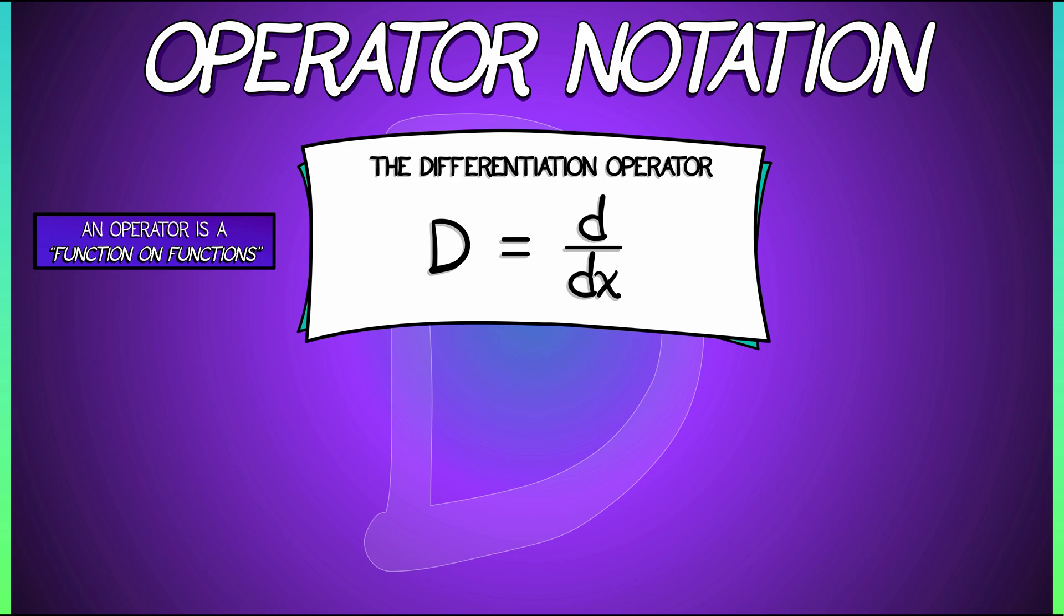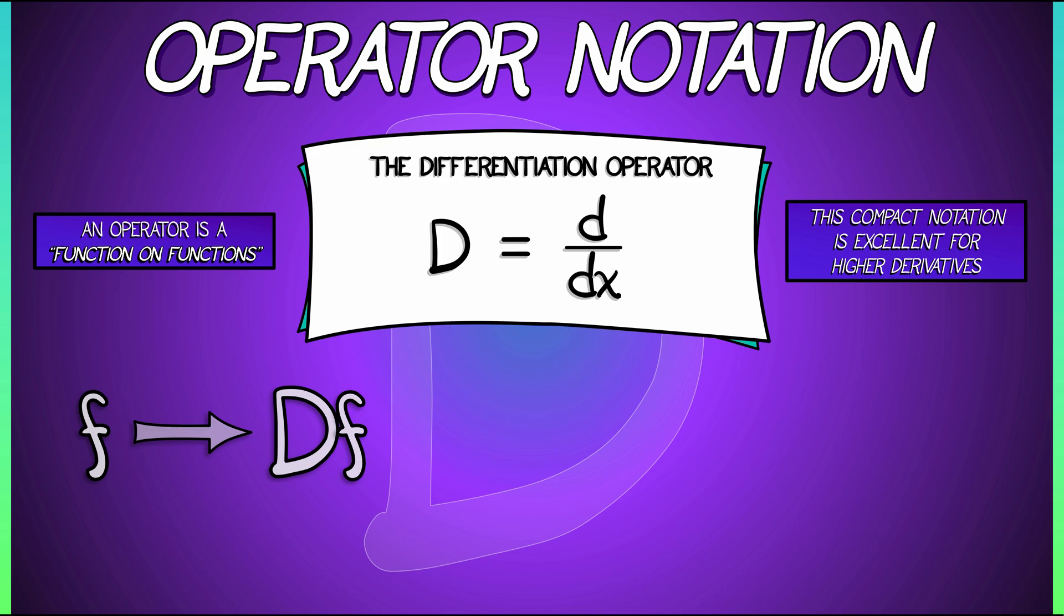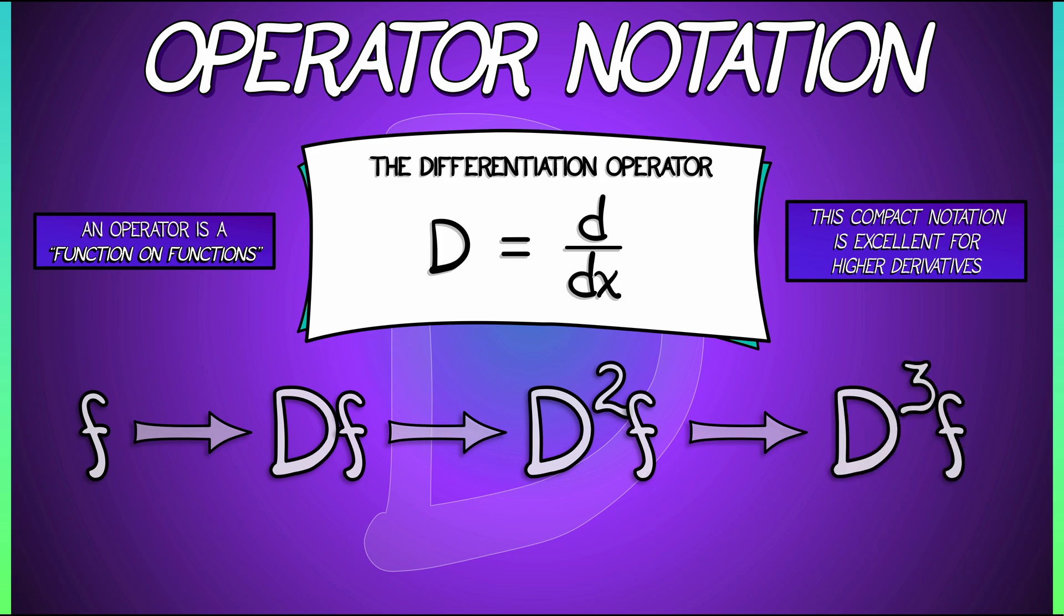Why? Because you go from f to the derivative, df, to the second derivative, d of d of f, which we write algebraically as d squared, the third derivative, d cubed of f, etc.